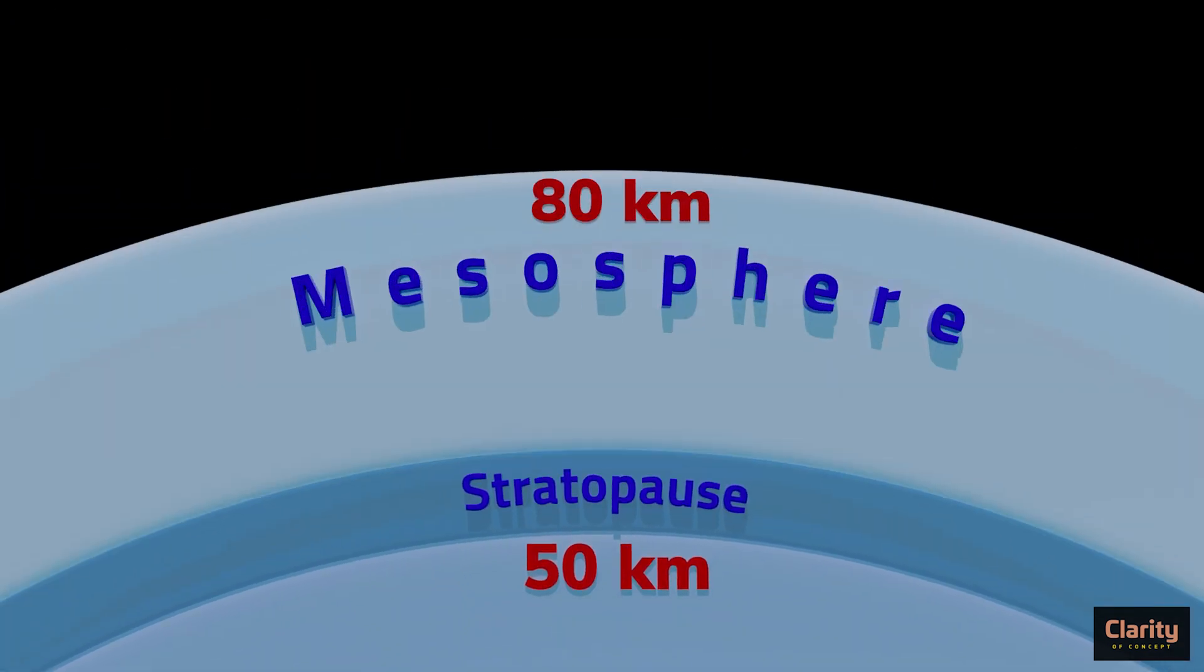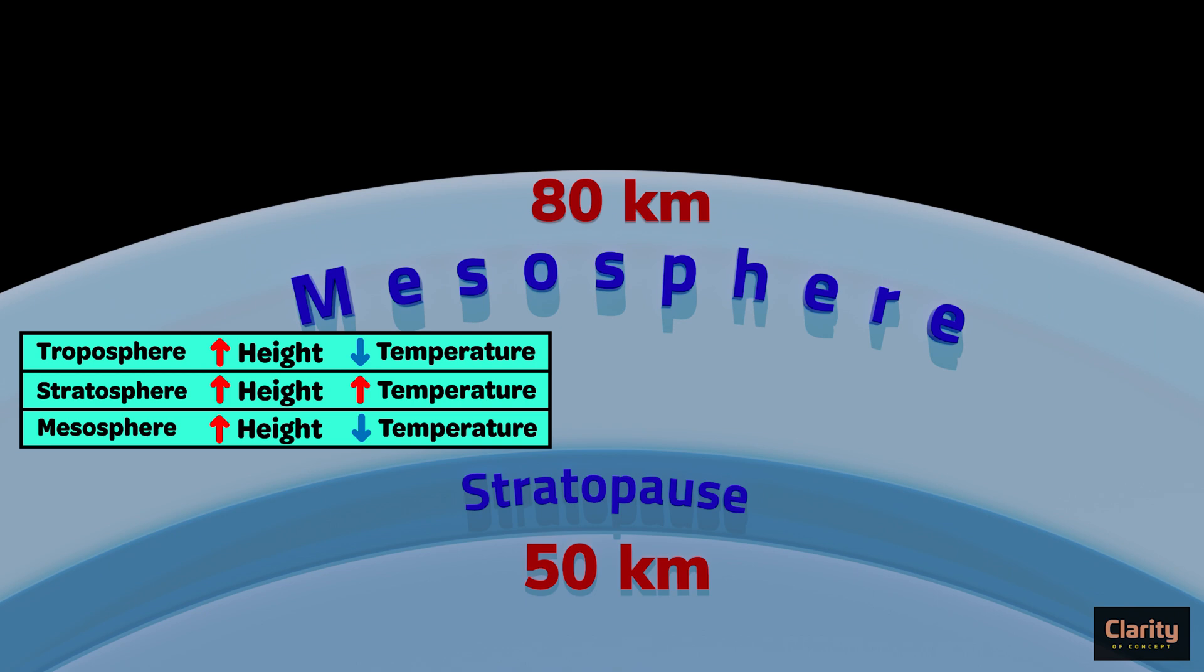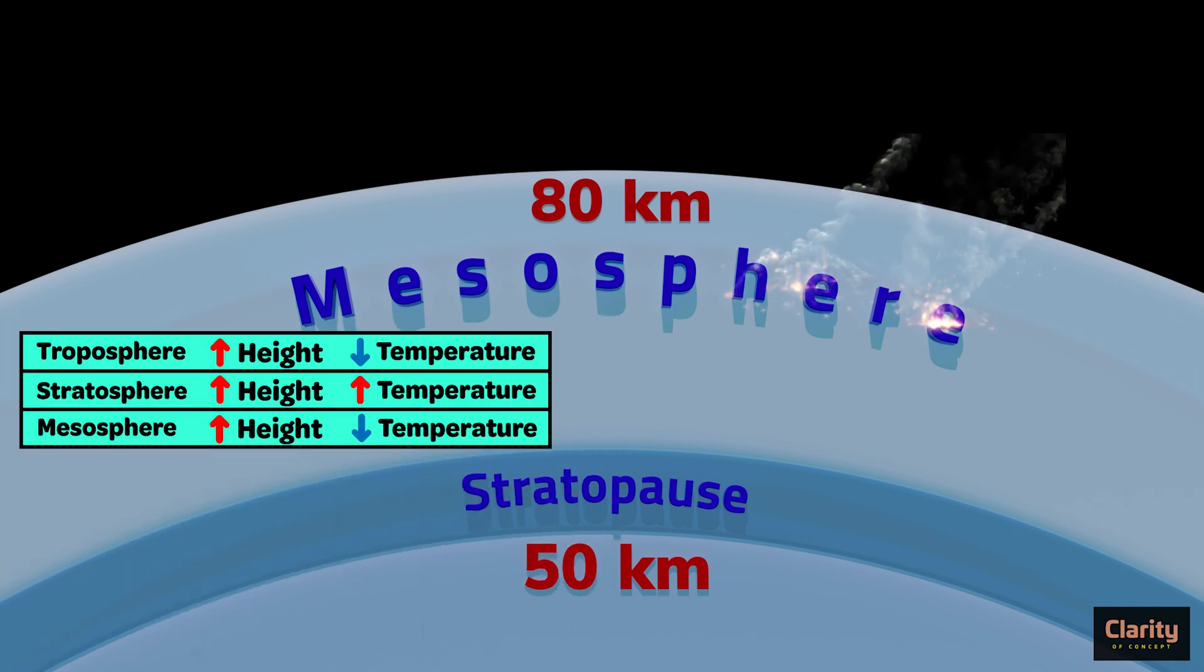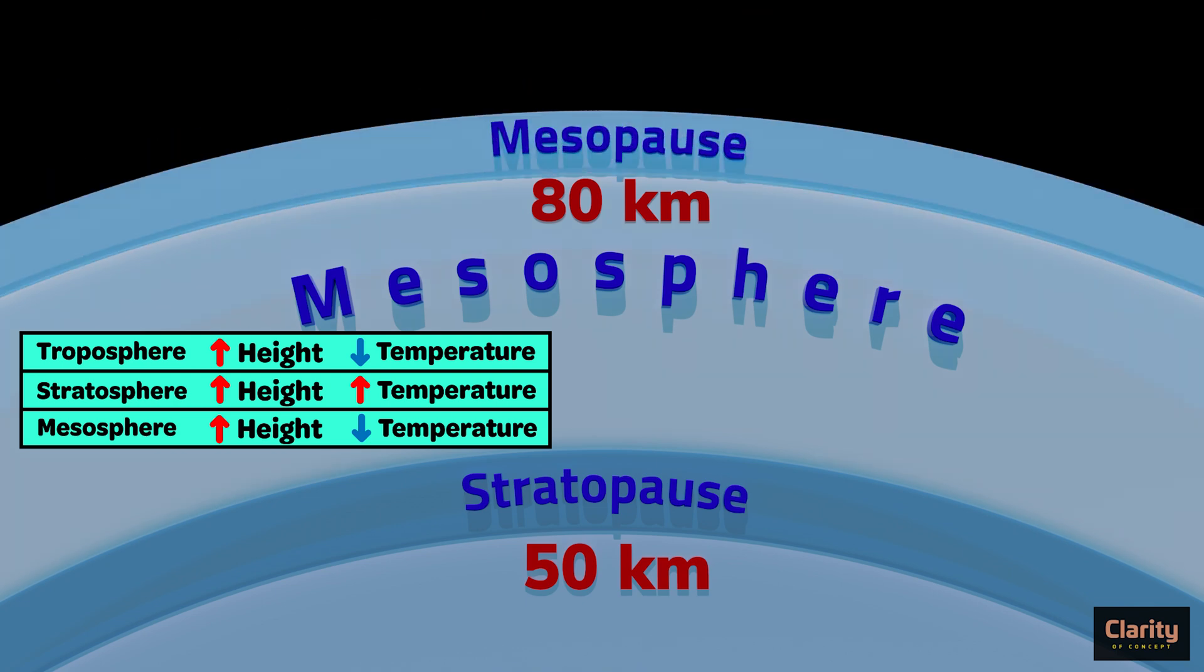From 50 kilometers to 80 kilometers, there is mesosphere. Temperature once again starts to decrease as you move higher in the mesosphere. It is the coldest place on Earth with average temperature itself being minus 85 degree Celsius. Even if small amount of water vapor exists here, it will condense into noctilucent clouds. Mesosphere is also the layer where meteors burn up. Mesosphere ends at around 80 to 85 kilometers where mesopause is located.